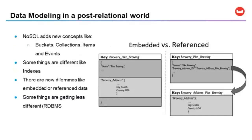NoSQL databases add concepts like buckets, but we do away with tables. There are collections, items, and events instead of triggers. Not everything is new, but some things are a bit different, like the way indexes work. When you're mapping an entity in a document database like Couchbase, you have the option to either reference the dependent object or embed it. You just have to think through things like the transactionality or lifecycle of the object.